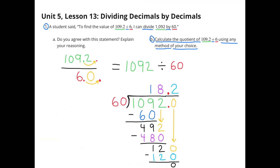B. Calculate the quotient of 109 and 2 tenths divided by 6 using any method of your choice. 109 and 2 tenths divided by 6 is the same as 1092 divided by 60 when you make the divisor and the dividend 10 times bigger. How many times does 60 go into 109? It goes in one time. Above the tens place, I put a 1.